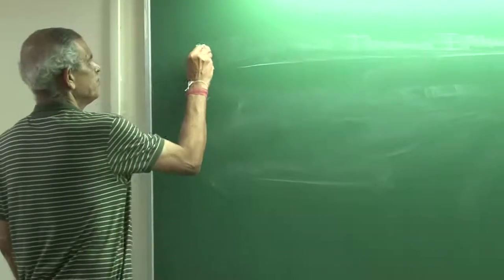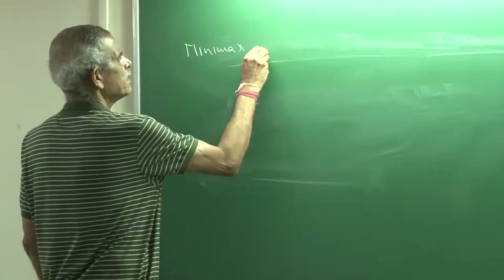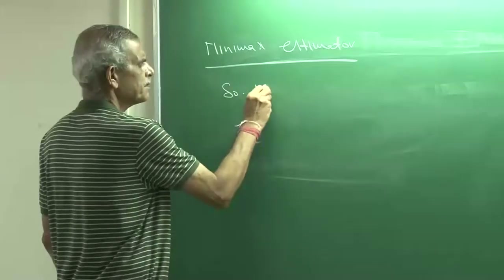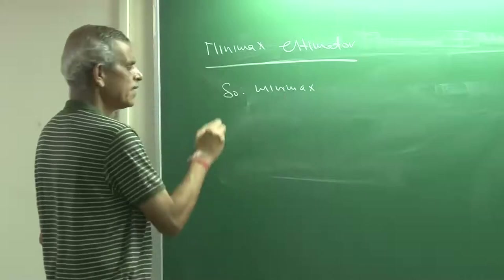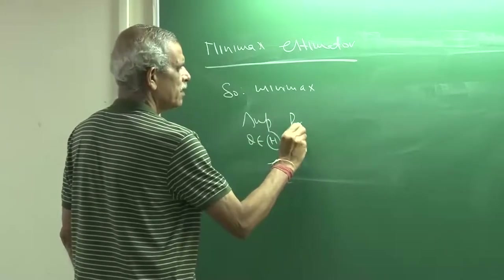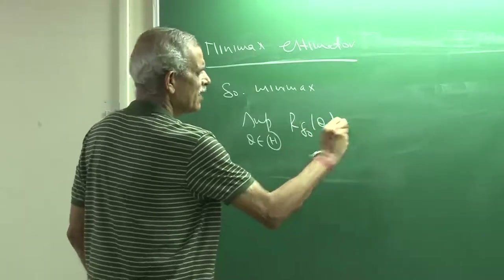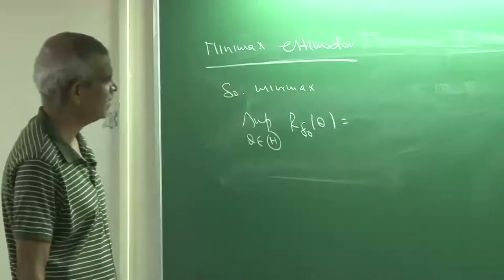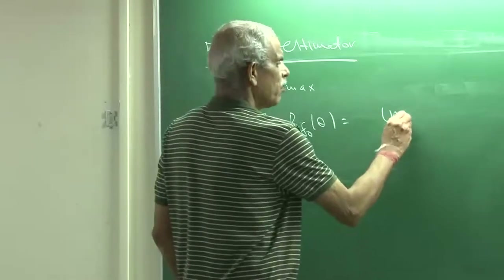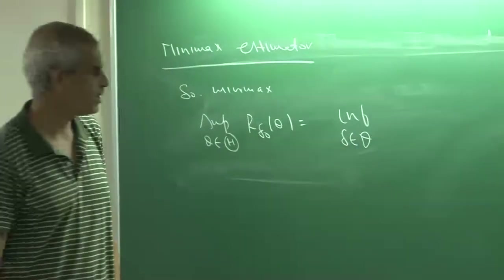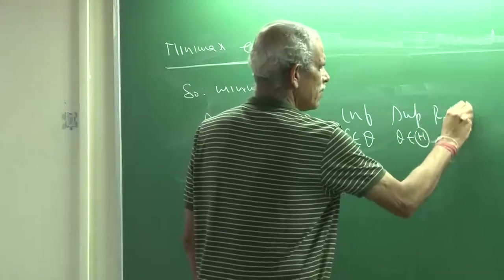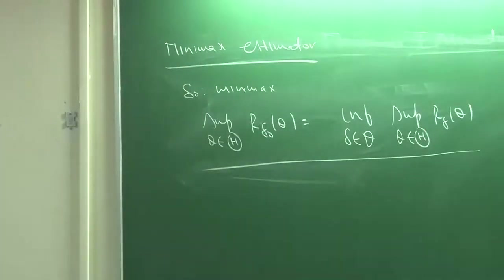Let us consider the Minimax estimator. We say that delta naught is Minimax if its maximum risk — that is, the supremum over theta of r(theta, delta naught) — is the smallest among all estimators. Formally, it is the infimum over all deltas in the class of all estimators of the maximum risk of delta. This is what the Minimax estimator is.